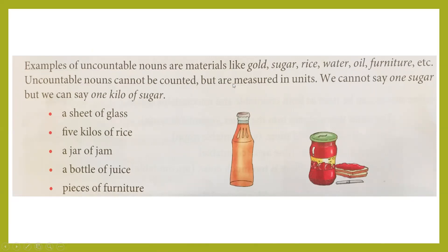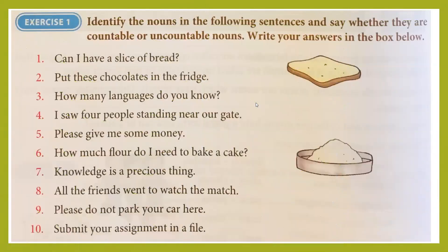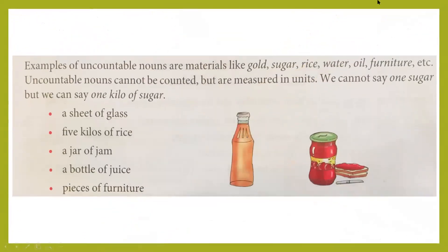Uncountable nouns cannot be counted, but we can measure them using a specific unit. For gold, we can say grams of gold. For sugar, one kg, two kg. For rice, one kg of rice. For oil, one litre of oil. Examples: one kg of sugar, a sheet of glass, five kilos of rice, a jar of jam, a bottle of juice, pieces of furniture. These units of measurement are used for uncountable nouns.